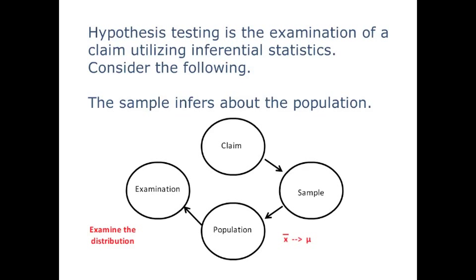Now, once X bar has implied some truths about mu, we want to examine that distribution. We will have some sort of confidence interval or some sort of picture that will tell us, based upon our sample, what the population looks like, and we will examine the distribution carefully against the claim.